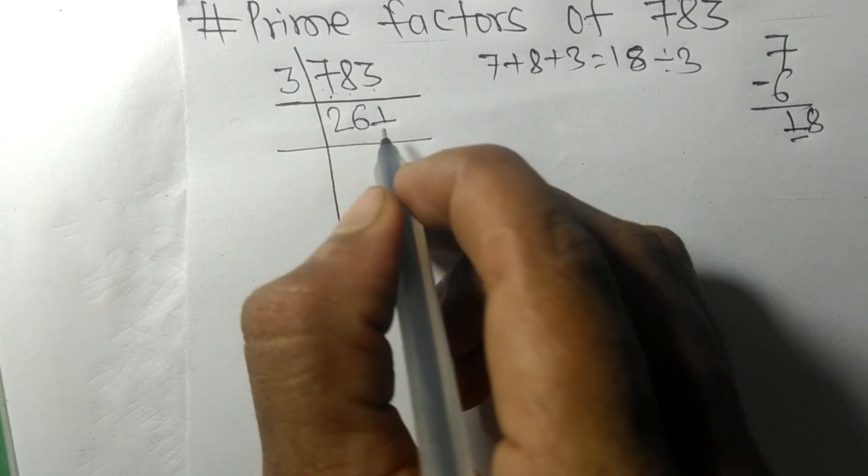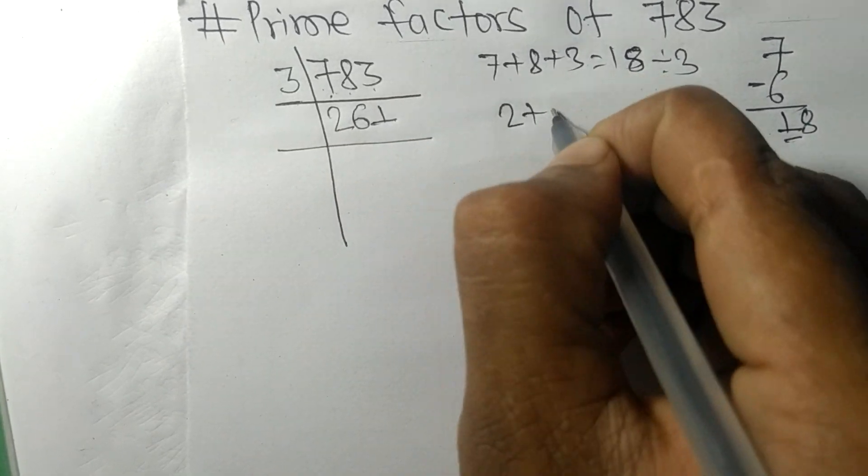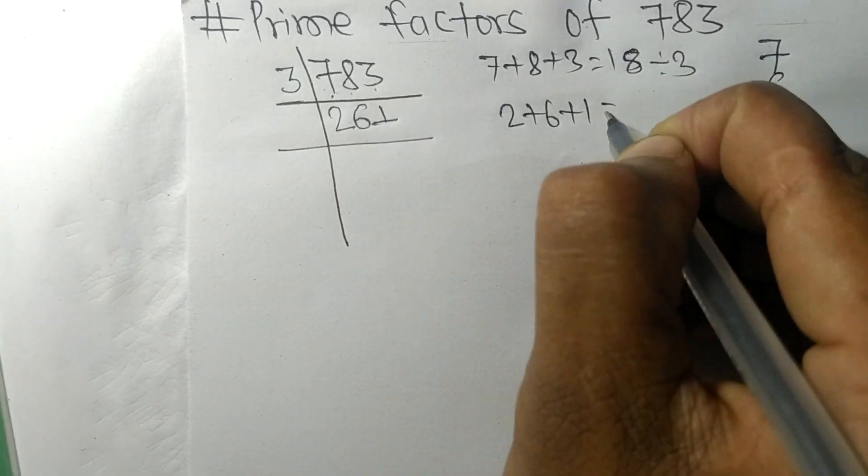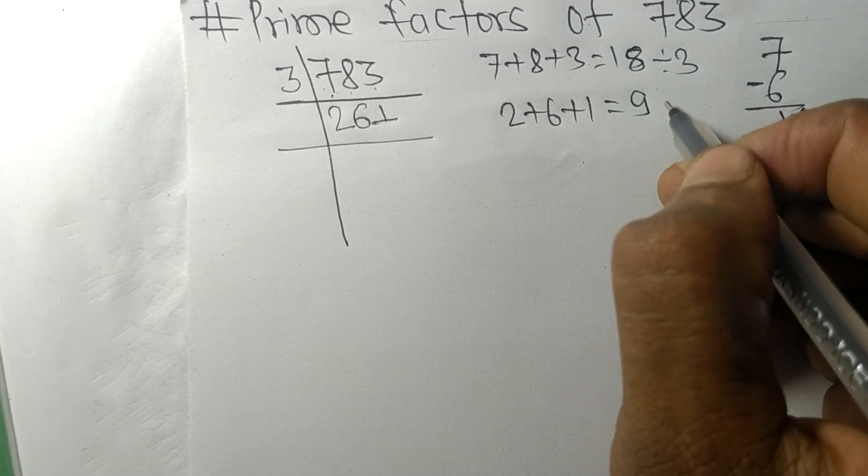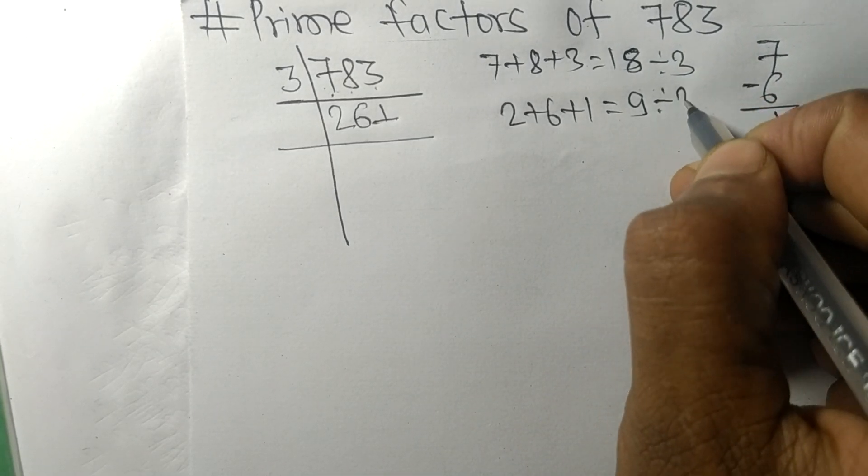When we add all these numbers, 2 plus 6 plus 1, we get 9, and 9 is exactly divisible by 3.